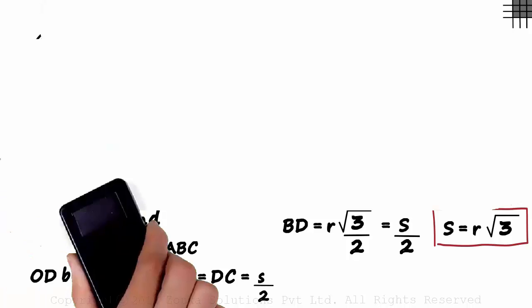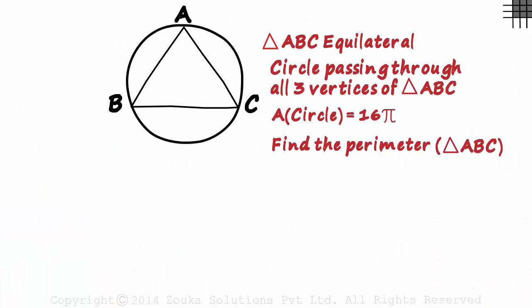Let's look at a typical problem that we may come across. We are given that ABC is equilateral, and a circle passes through all three vertices of this triangle. We are given the area of the circle as 16 pi, and we are expected to find the perimeter of the triangle ABC.